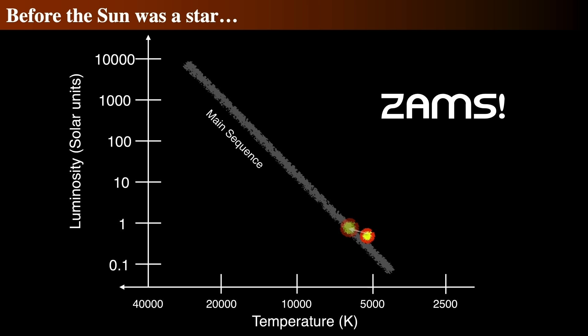What we'll show is a sketch of the Hertzsprung-Russell diagram, and on this we'll plot a track, called a Hayashi track, that shows how the Sun's temperature and luminosity changes with time.